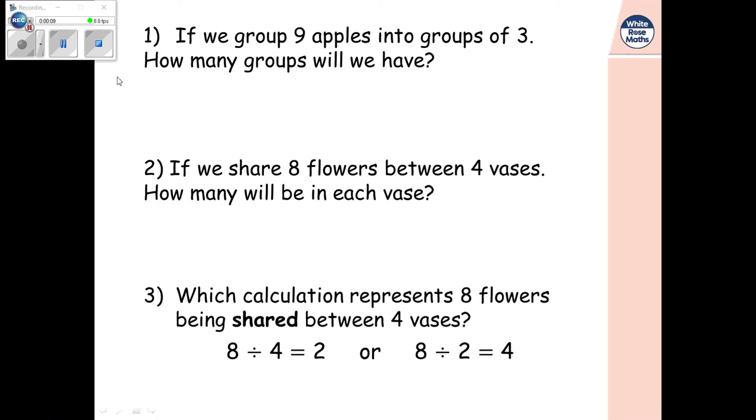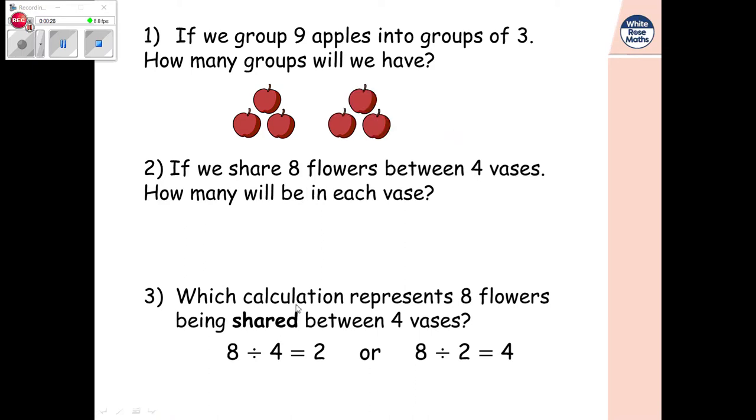Number one we'll do together first of all. If we group nine apples into groups of three, how many groups will we have? So what I would start doing is grouping them into three and keep going until I get to the number nine. So let's do the first one. So group of three, then I know I can do four, five, six, seven, eight, nine and they're all groups of three. So I know how many groups will we have. We will have one, two, three.